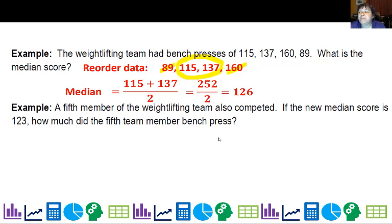A fifth member of the weightlifting team also competed. If the new median score is 123, how much did the fifth team member bench press? That new score could go anywhere, but if we're going to have five data points, the median will be the centermost point. So it's probably going to be right there in the center, 123.